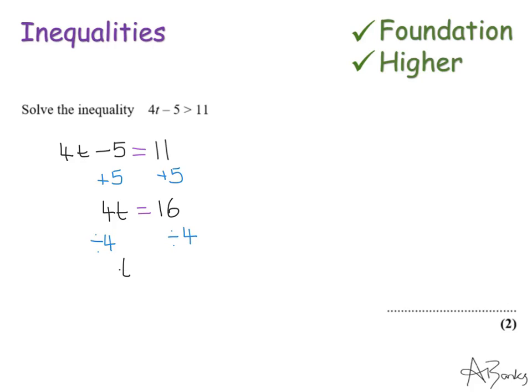Adding 5 to both sides gives me 4t equals 16, so I divide by 4 to find t, which gives t equals 4. But that's not the actual answer because it was never an equal sign — it was a greater than sign. So all I need to do to get my final answer is replace the equal sign with the greater than symbol. My answer is t is greater than 4.